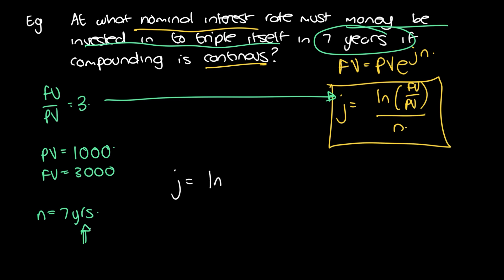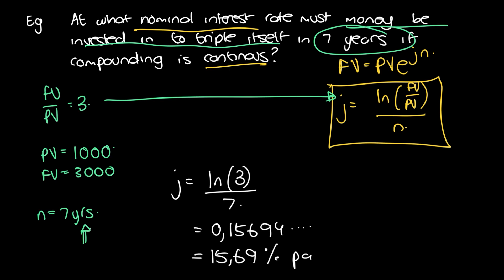Substituting into the formula: j equals ln(3) divided by 7. Entering this into the calculator gives 0.15694..., which in percentage is 15.69% per annum continuously compounded. The decimal fraction (0.15694) is the formula-based answer, while 15.69% per annum CC is how we'd express it when discussing the result.